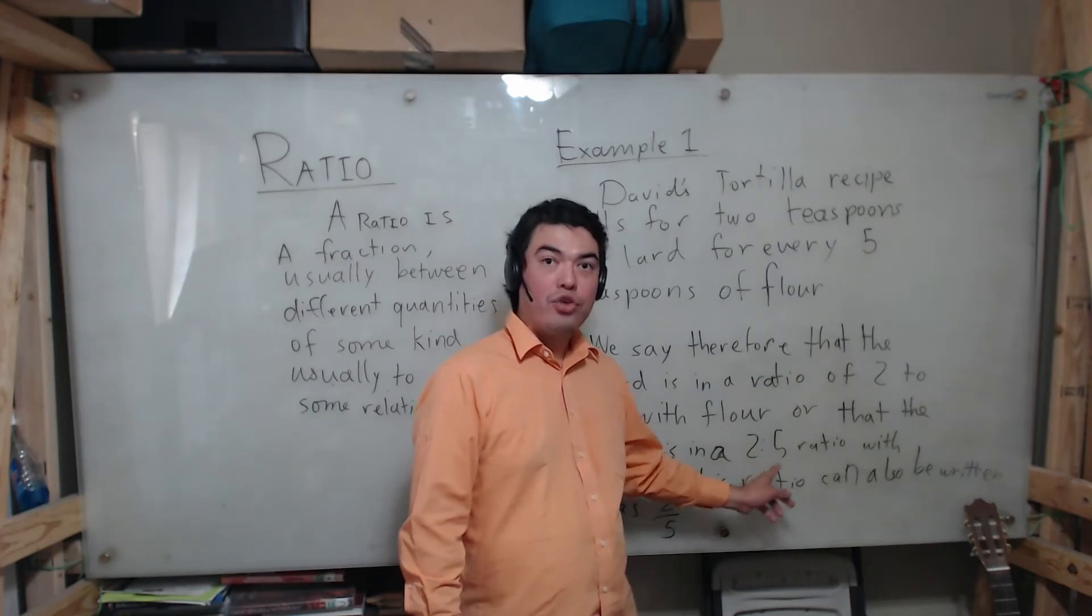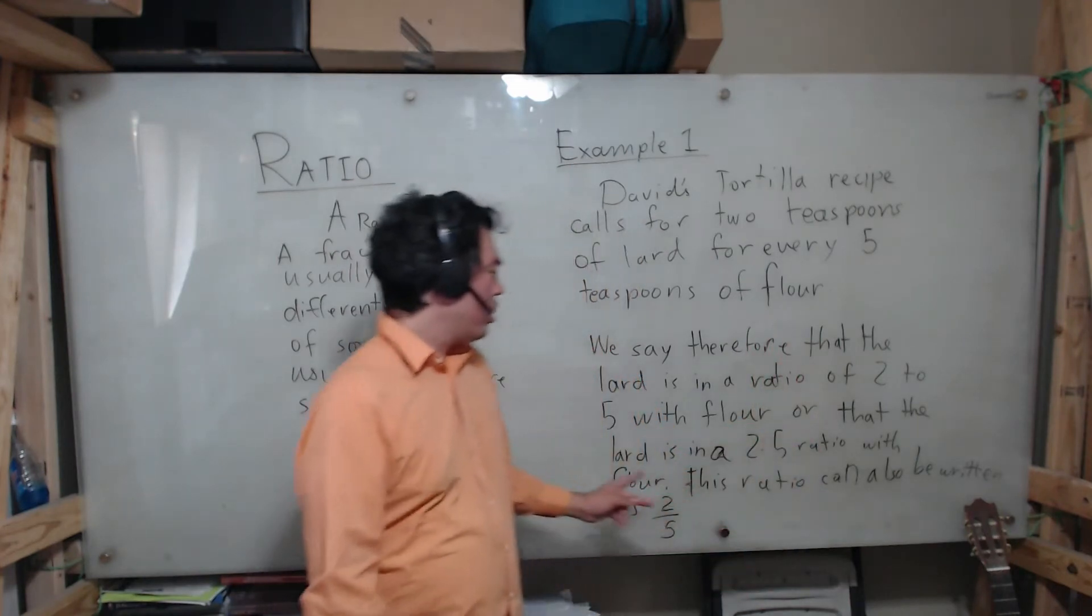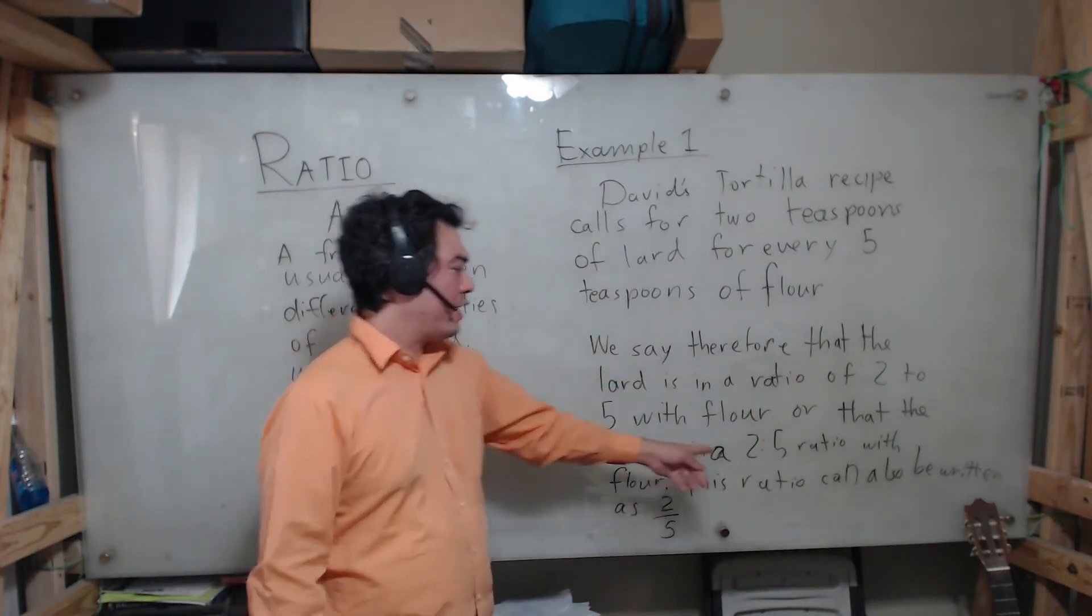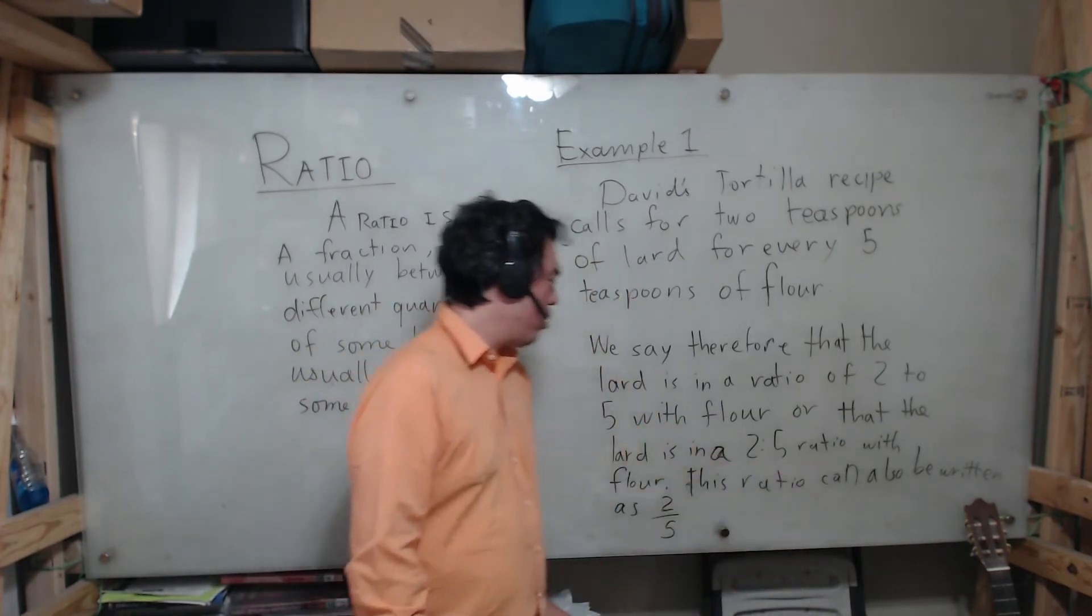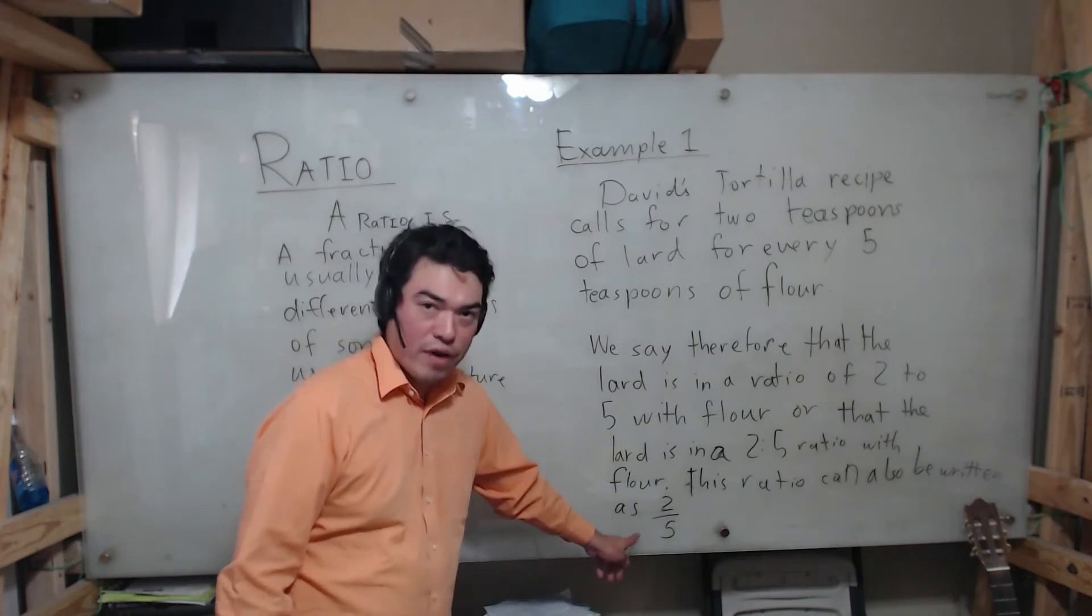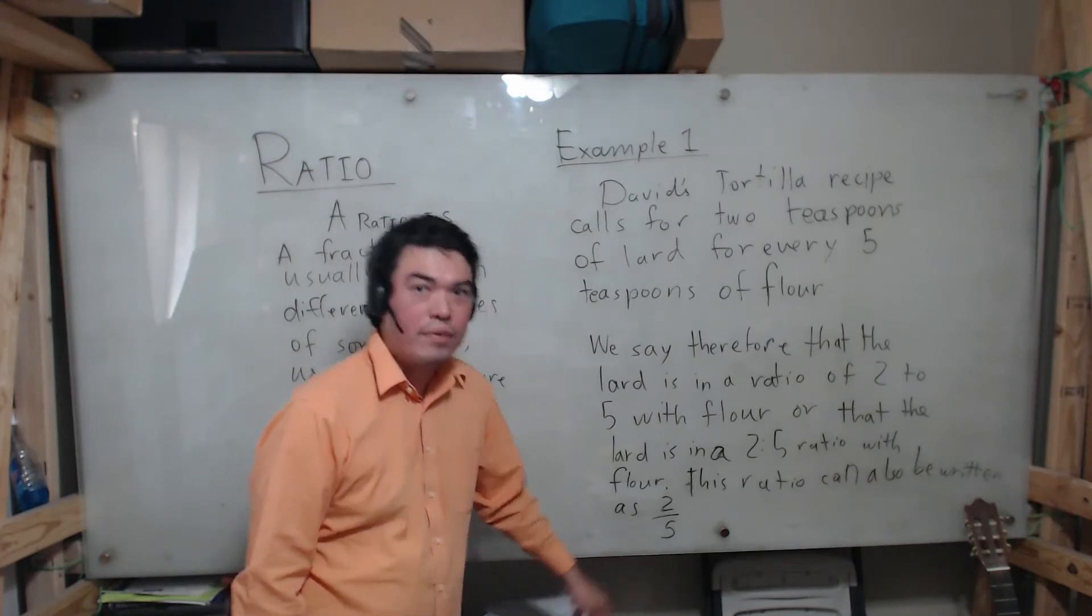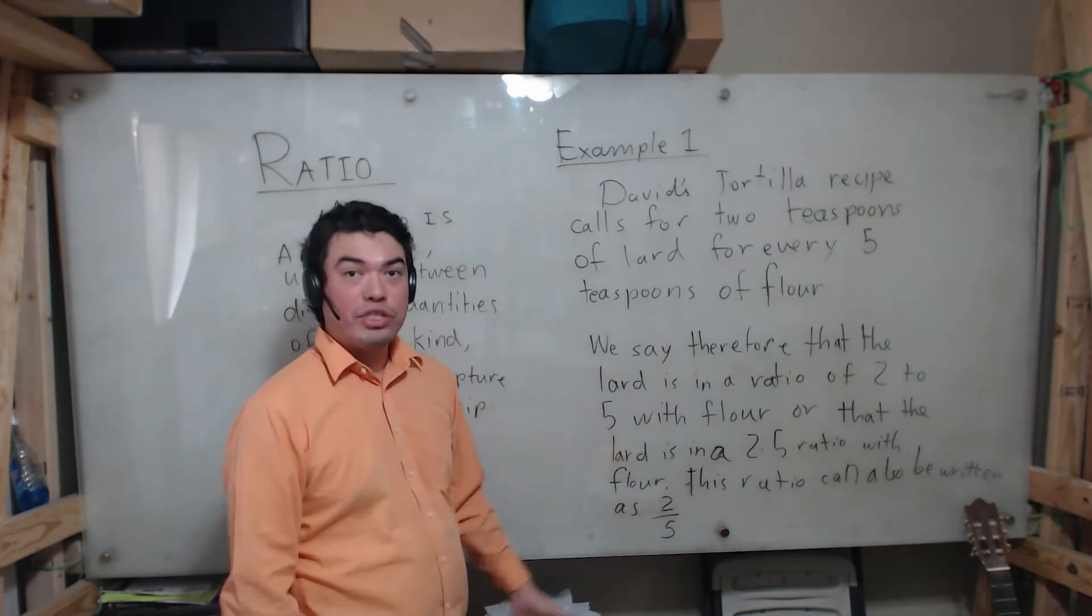Of course I could also say that the flour is in relationship with lard in a five to two ratio. Then if I want to I could scale it up. I said teaspoons, but because I know that that relationship exists, that two to five relationship, I know if I want to use cups I could do two cups of lard for every five cups of flour and so on. That will be example number one.